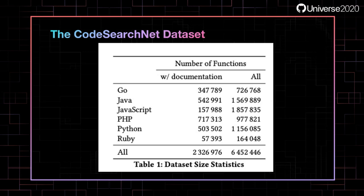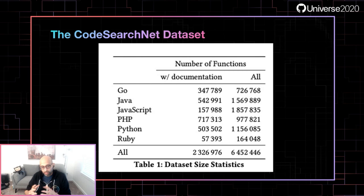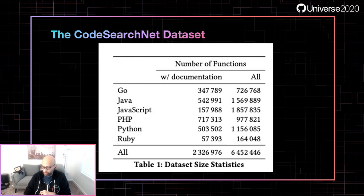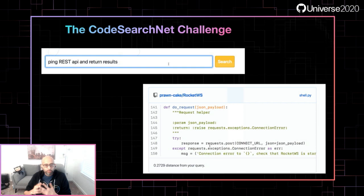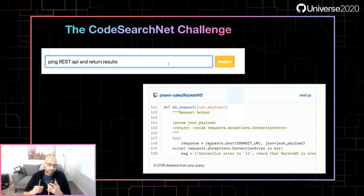CodeSearchNet is a large corpus — essentially code and comment pairs. There are two million code and comment pairs pulled from various GitHub repositories, cleaned and curated, which is a treasure trove of data for researchers. Various languages are represented: Go, Java, JavaScript, Python, Ruby, and so on. In addition to the data, there are also benchmarks and reference models. One task proposed is search.